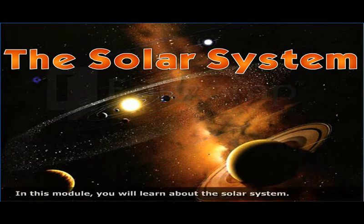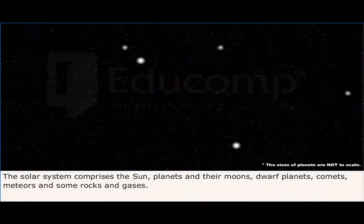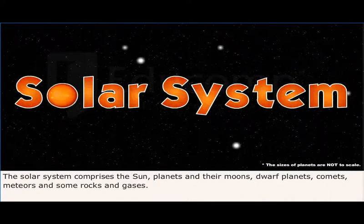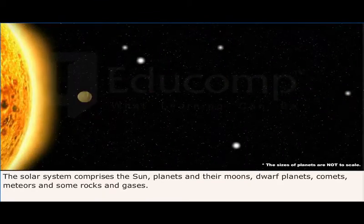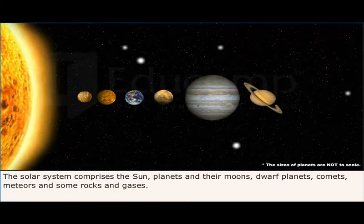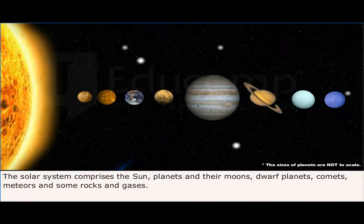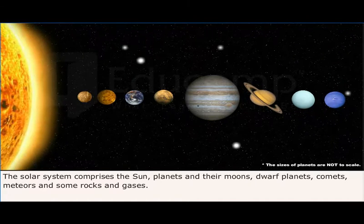In this module you will learn about the solar system. The solar system comprises the Sun, planets and their moons, dwarf planets, comets, meteors, and some rocks and gas.